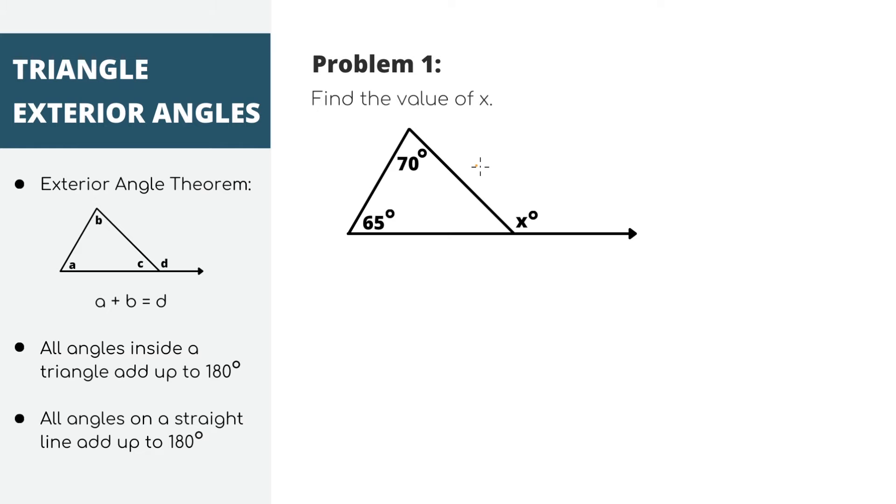Let's look at our first problem. This is a typical exterior angle problem where you have a triangle with a little tail and it asks you to find the value of the exterior angle x. Every time we talk about the exterior angle, it's this angle on the outside of the triangle that we're referring to. We can use the exterior angle theorem which says that the sum of the interior angles here add up to the exterior angle here.